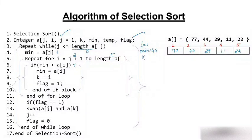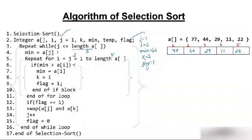We increment i to 4. Is minimum (29) greater than a[4] (11)? Yes — 29 is greater than 11. Minimum becomes 11, k = 4, flag = 1. We increment i to 5. Is minimum (11) greater than a[5] (22)? No — condition is false. We come out of the if block. i increments to 6, which exceeds 5, so we exit the for loop.